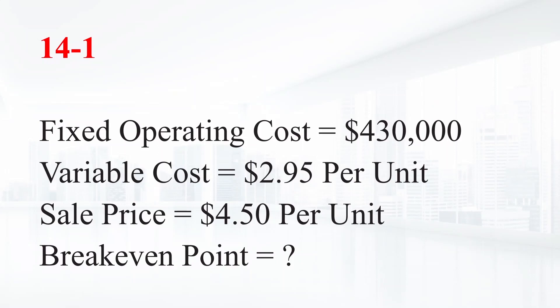A company's fixed operating costs are $430,000. Its variable costs are $2.95 per unit and the product sale price is $4.50 per unit. What is the company's breakeven point? That is, at what unit sale volume will its income equal its cost?